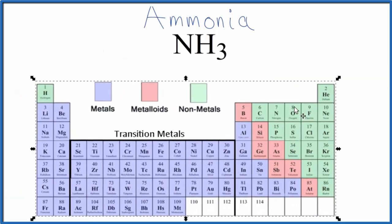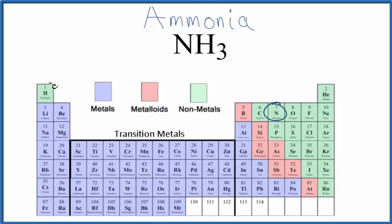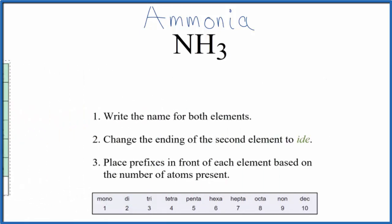We could look at the periodic table and see that nitrogen and hydrogen are both nonmetals. So we have two nonmetals, which means we have a covalent or molecular compound. We can use these rules to write the name for NH3.